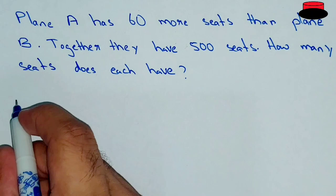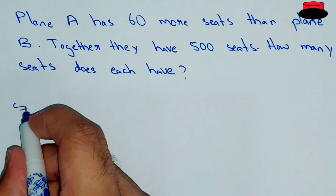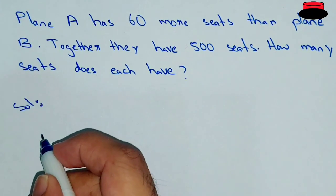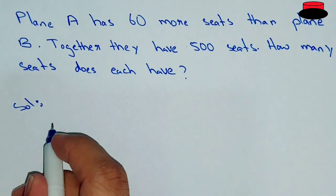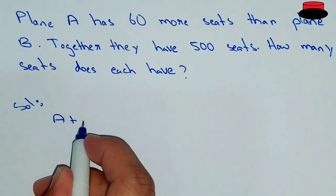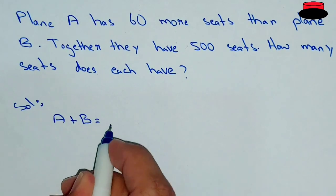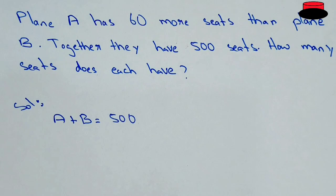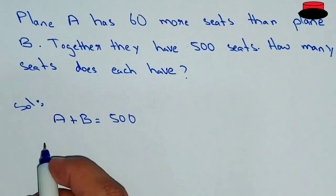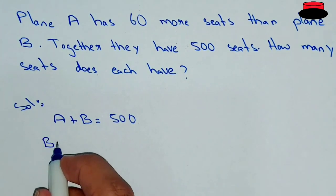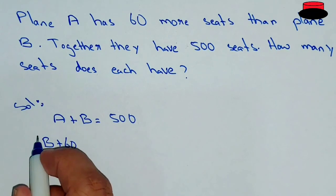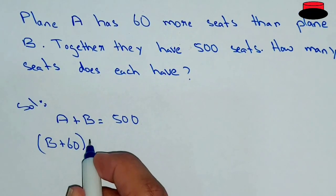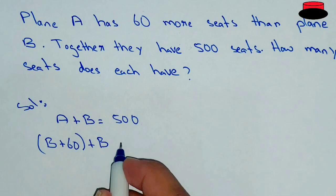We have to find out the total number of seats in Plane A as well as in Plane B. So we are writing A plus B, it means Plane A plus Plane B is equal to 500, because the total number of seats in both planes are 500. So we know that Plane A has 60